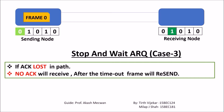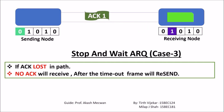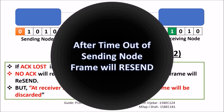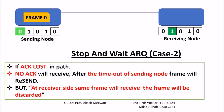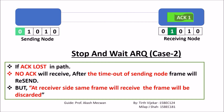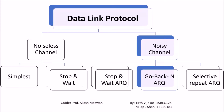Now let's see what will happen if the acknowledgement is lost. As in the previous case, the transmitter will timeout and resend the frame. But this time the frame was already perfectly received at the receiver. The receiver will simply discard the resent frame and resend the acknowledgement.